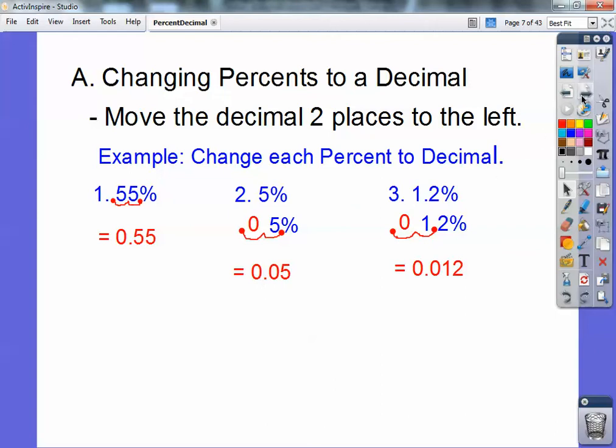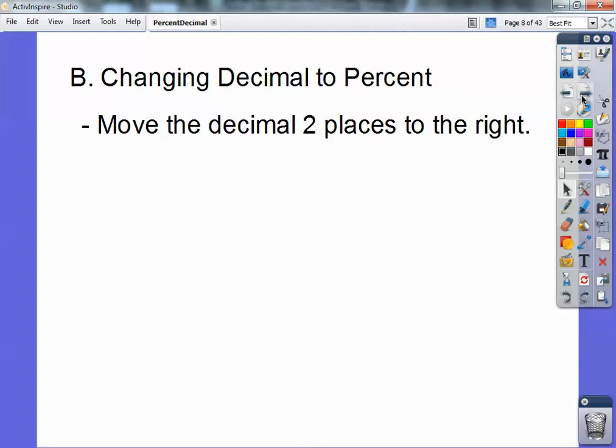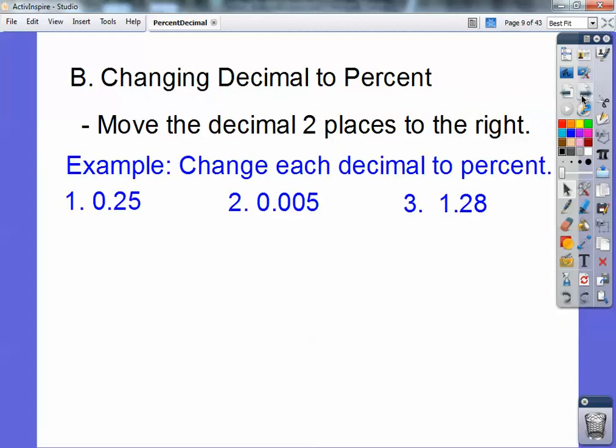And then to change decimals to percents, you just do the opposite. You move the decimal two places to the right. So this goes over here, one, two, so it's 25%. This goes two places to the right, one, two, so it's 0.5%, and then this one becomes 128%. Easy enough, huh?